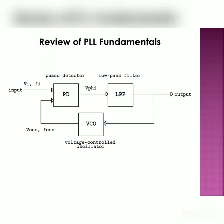The input to the phase detector will be the external input signal having voltage VI and frequency Fi. The second input to the phase detector is obtained from the output of the VCO having frequency F oscillator. The input to the VCO comes from the output of the low pass filter, and the output of the phase detector is proportional to the phase difference between the two inputs, which acts as input to the low pass filter.